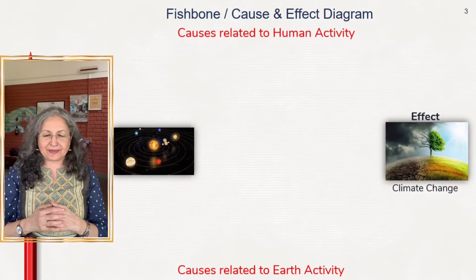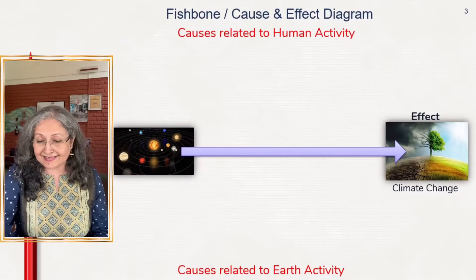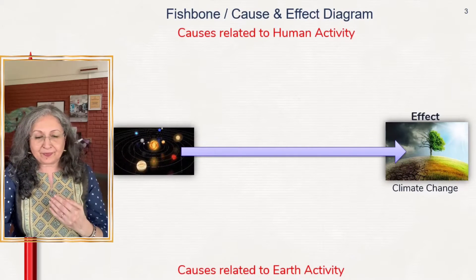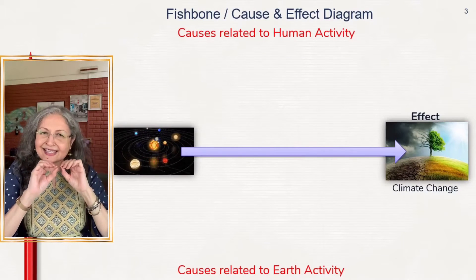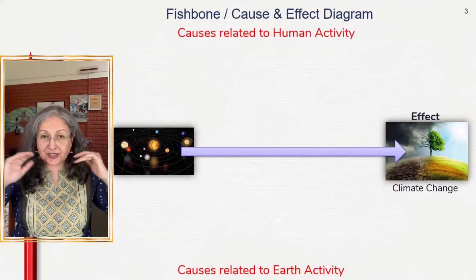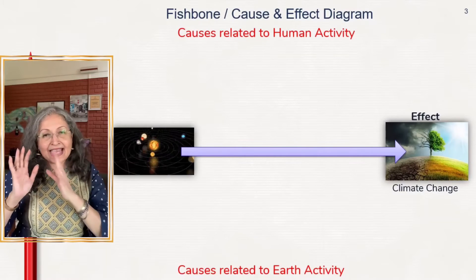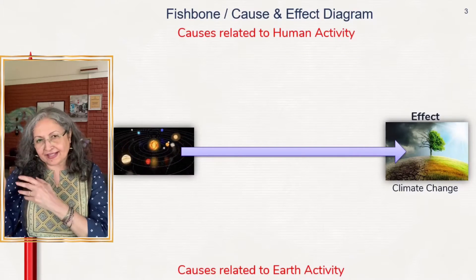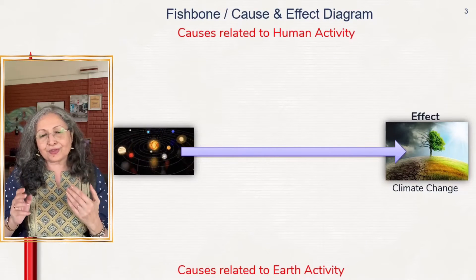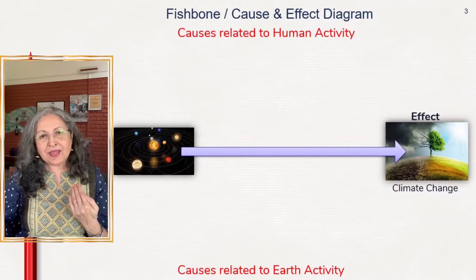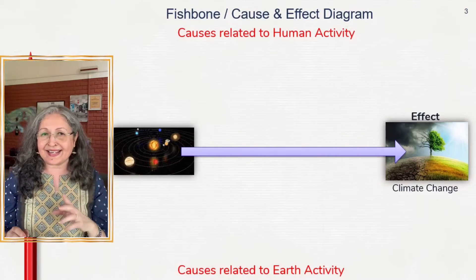Let us look at the first example: climate change, from environment studies or geography. The central line at the center of the screen is the spine of the fish. If you eat fish, you know what an eaten fish bone looks like. At the head of the fish, you put the effect — in this case, the effect is climate change. This diagram is also known as the Ishikawa diagram.